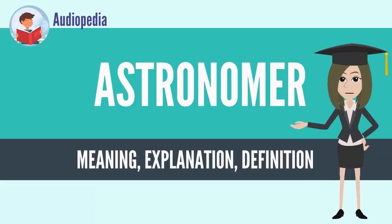An astronomer is a scientist in the field of astronomy who focuses their studies on a specific question or field outside the scope of Earth. They observe astronomical objects such as stars, planets, moons, comets, and galaxies.